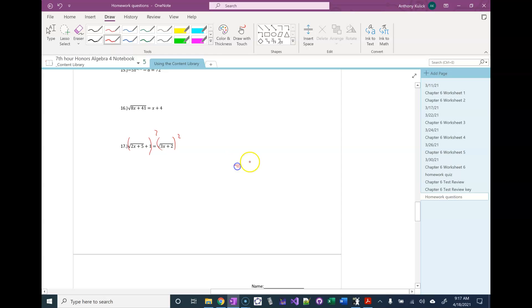So the right-hand side is easy. The square just cancels the square root. The left-hand side, though, we have to FOIL out.